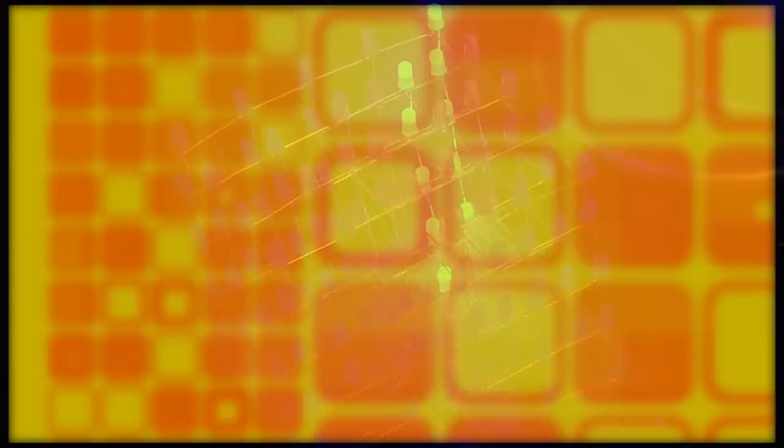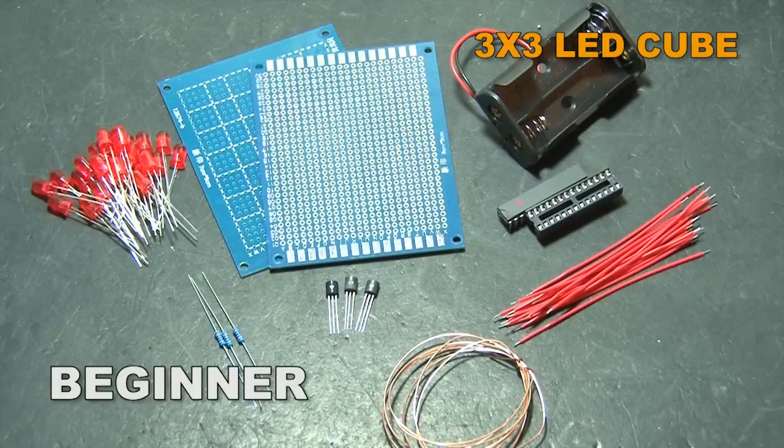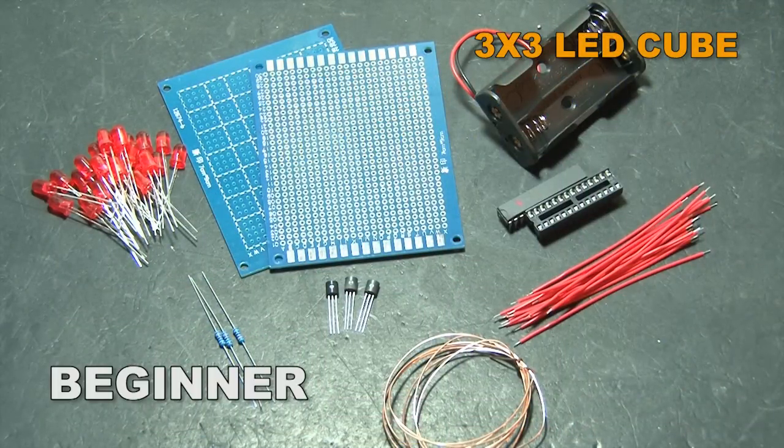Okay, you want to make your own? Well, here's how to get everything you need to build a DIY LED Cube. The beginner kit includes everything you need to build a 3x3 Cube. The circuit boards, the pre-programmed microcontroller, resistors, transistors, wire, the LEDs, and the battery holder.